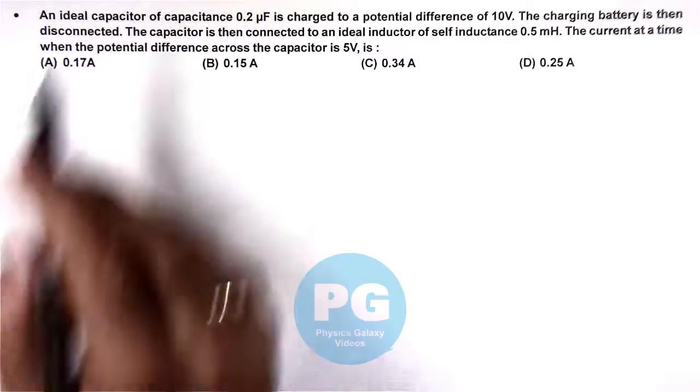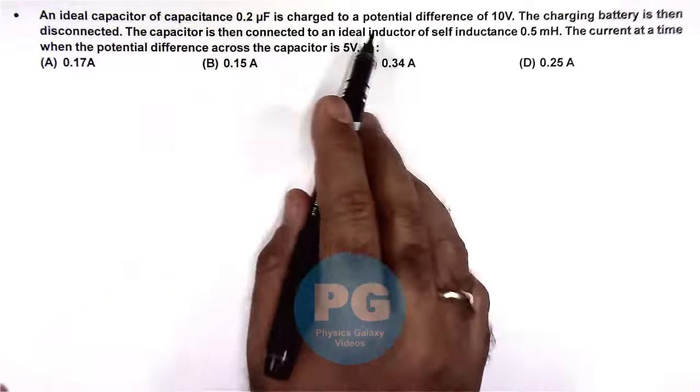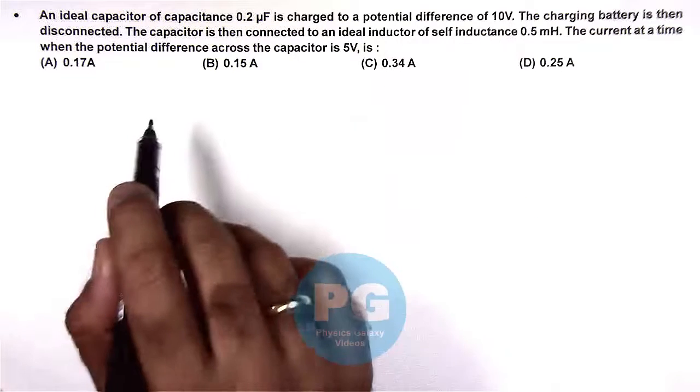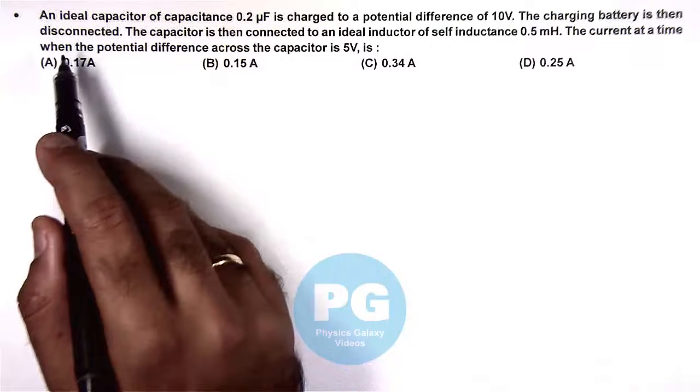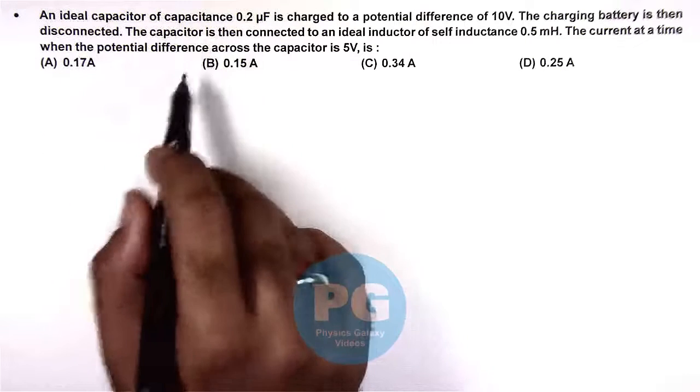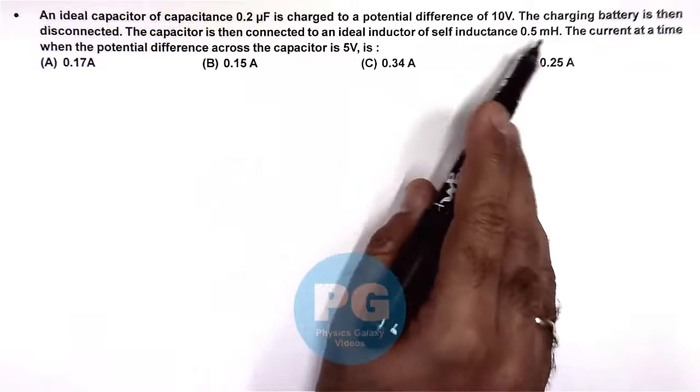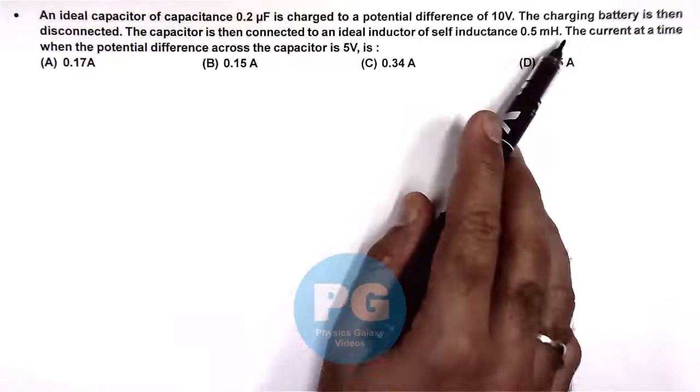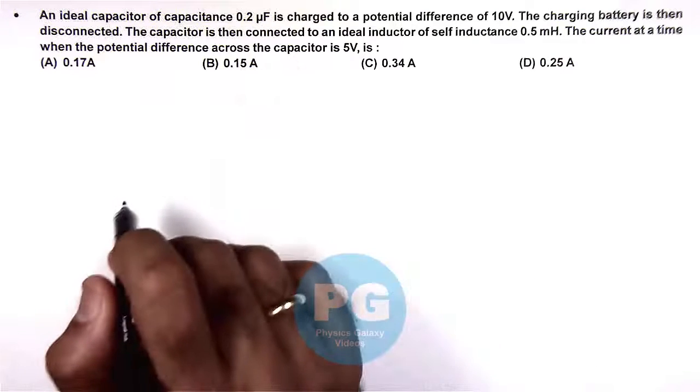In this question, an ideal capacitor of capacitance 0.2 microfarads is charged to a potential difference of 10V. The charging battery is then disconnected and the capacitor is connected to an ideal inductor of self-inductance 0.5 millihenries. The question asks for the current at the time when the potential difference across the capacitor is 5V.